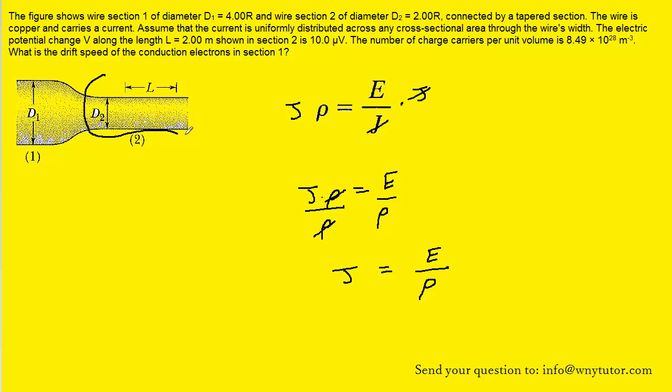Now we're going to examine section 2 of this setup because we actually know the length of that section. We're going to come up with an expression for the electric field that is present in section 2. We know that the electric field would equal the potential difference across that length of wire in section 2 divided by that length itself. So we're going to substitute this expression for electric field in for E.